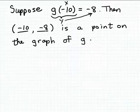Remember, a relation is a set of ordered pairs. So this function notation just indicates to us that the ordered pair minus 10, minus 8 is part of this relation. Remember, all functions are relations.